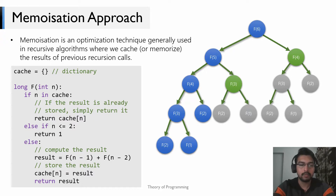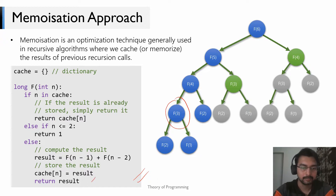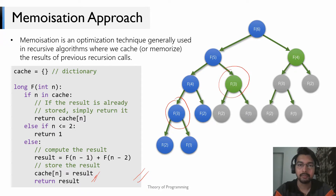This is the code for the memoized version of the naive algorithm. If this method is called for F(3) and I haven't already computed it, I compute it and store it in my cache. So the next time I'm required to call F(3), I already have the result and simply return it.